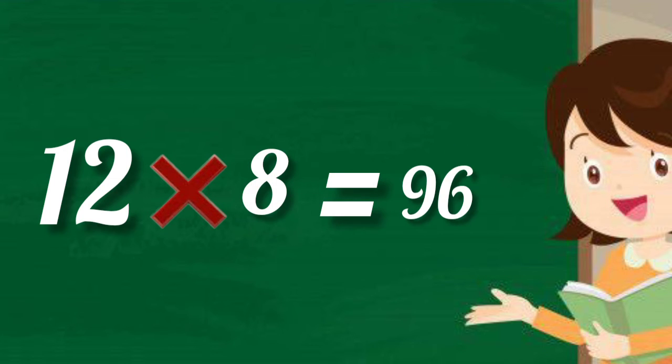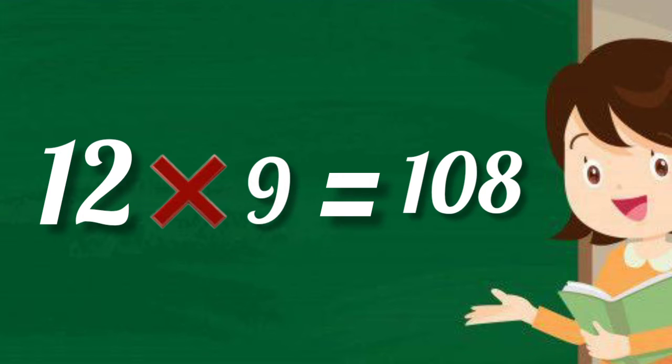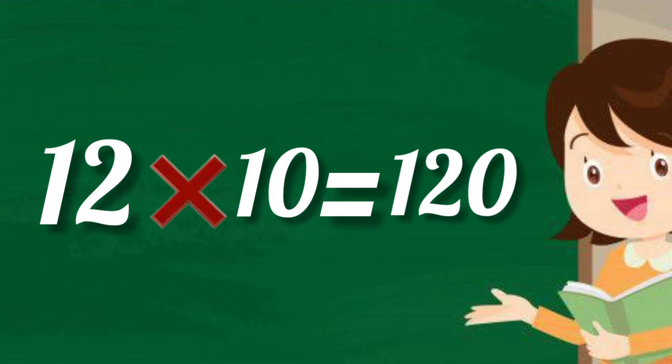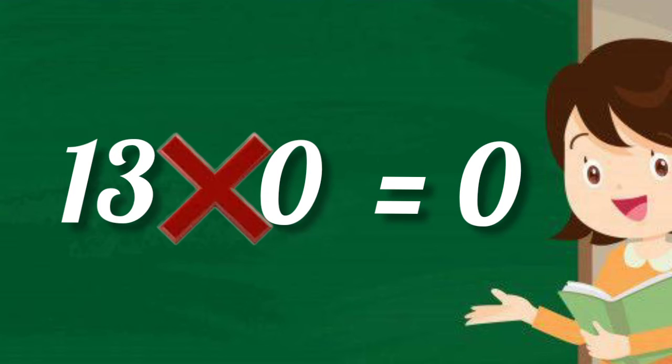12 eights are 96, 12 nines are 108, 12 tens are 120. 13 zeros are 0.